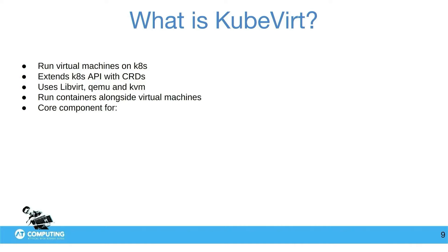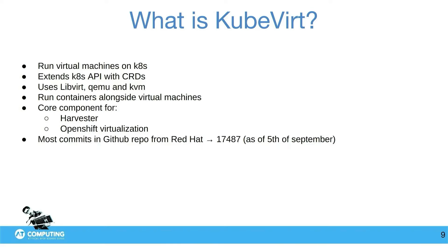Some fun facts: KubeVirt is used as a main component for Harvester from SUSE, and OpenShift also uses it for OpenShift virtualization. As of the 5th of September, Red Hat is doing the most contributions to KubeVirt. There is a lot of love and hate in the open source community about Red Hat, but sometimes they do a pretty good job and invest real money into certain open source projects.